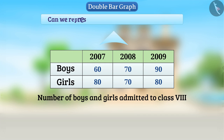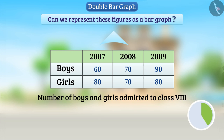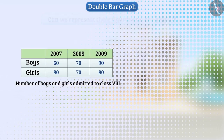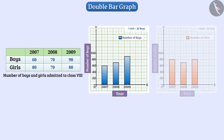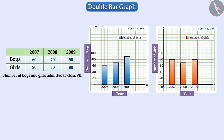Can we represent these figures as a bar graph? Here we can draw different bar graphs for the number of boys and girls, but it will be difficult to obtain information from these.